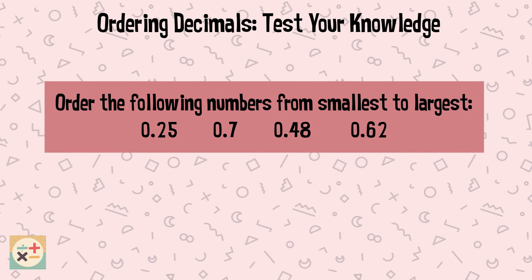Question 1. Order the following numbers from smallest to largest: 0.25, 0.7, 0.48, and 0.62.